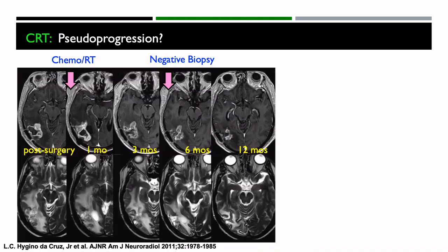Here's another example of pseudoprogression. A patient treated with chemoradiation therapy — looking at the post-contrast image, it looks like they're definitely having continued and possibly increased enhancement. For this reason, this patient also went back to surgery, and the biopsy came back as negative. If you had waited some months later, you would see that the tumor actually regressed.